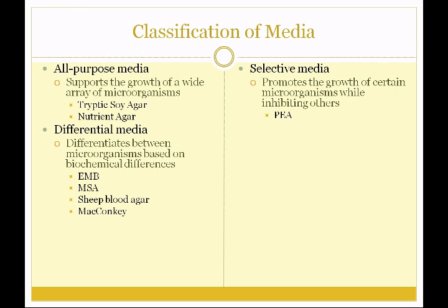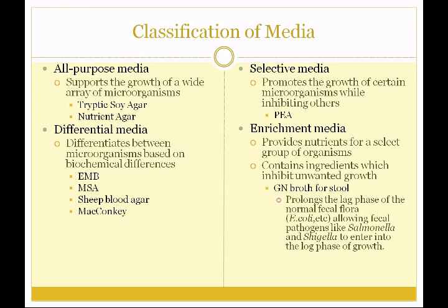The selective medium we'll be using in this lab is called PEA. Enrichment medium provides nutrients for a select group of organisms; it contains ingredients which inhibit unwanted growth and promote the growth of the organism we want. For example, there's a medium called GN broth — that stands for gram-negative — that we use for stool. We inoculate a stool specimen into the broth; this prolongs the lag phase of the normal fecal flora such as E. coli and allows fecal pathogens like Salmonella and Shigella to enter faster into the log phase of growth.